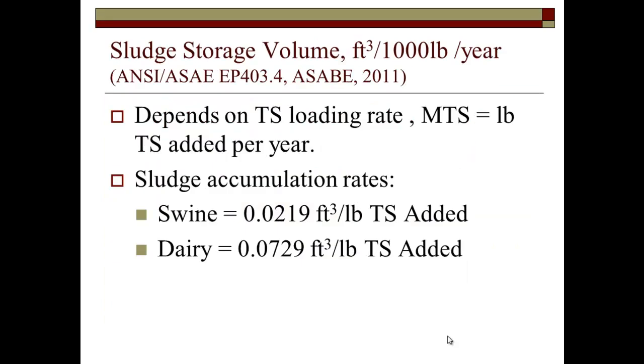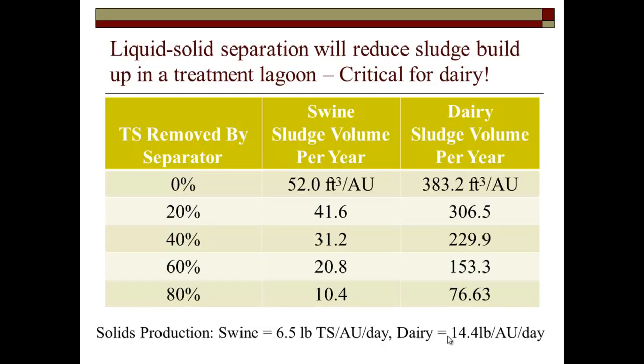For sludge storage, these are some updated numbers in the new ASAB standard — there's also one for poultry I didn't include. The dairy one didn't change; it's actually very conservative. The swine one is much smaller than it used to be. You decide how many years of sludge storage you want — one year, five years. Not many people build for 10 years anymore; it's just too expensive. Whatever percent TS removal I get from the separator, I get that same reduction in sludge volume.